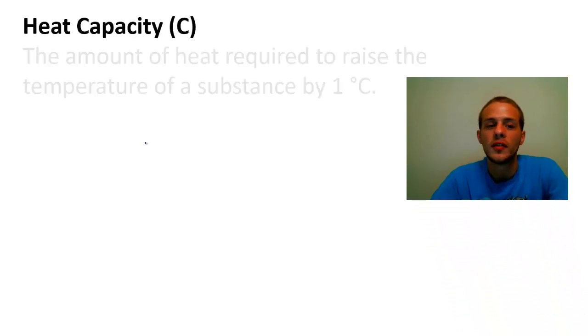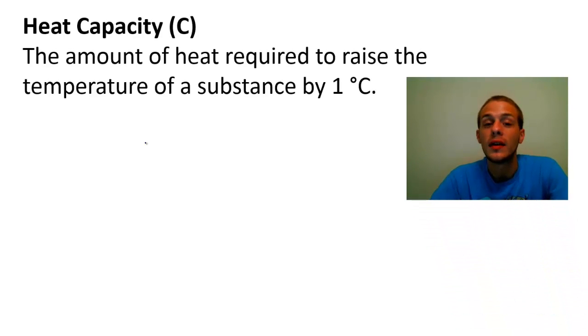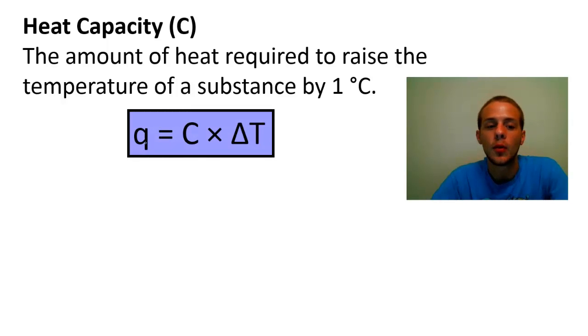So the heat capacity of a substance is basically just the amount of heat that's required to raise the temperature of that substance by one degree Celsius. And again we get this equation right here where we have the amount of heat absorbed equals the product of the heat capacity and the change in temperature.